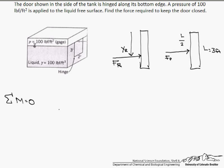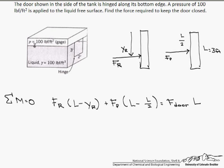So how do we write that out? It is the resultant force because of the water, times l minus y sub r — because that is where the lever arm is going to be — plus the force of the pressure, times l minus l over 2, is going to equal the force on the door times l, where again l is the lever arm.